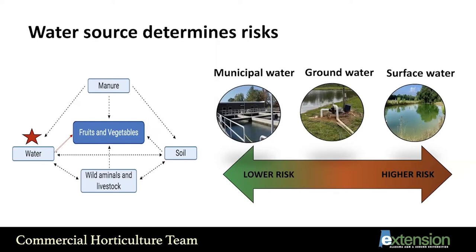Water source determines the risk. Municipal water poses the lower risk — it's treated water and should be safe unless you have problems at your end. Groundwater is between surface and municipal: considerably safe, but sometimes you have problems such as flooding in the area contaminating the watershed or issues with the wellhead. Surface water is the biggest problem — the highest risk source. It's open to the environment and anything can contaminate it: animals, birds, human activities.